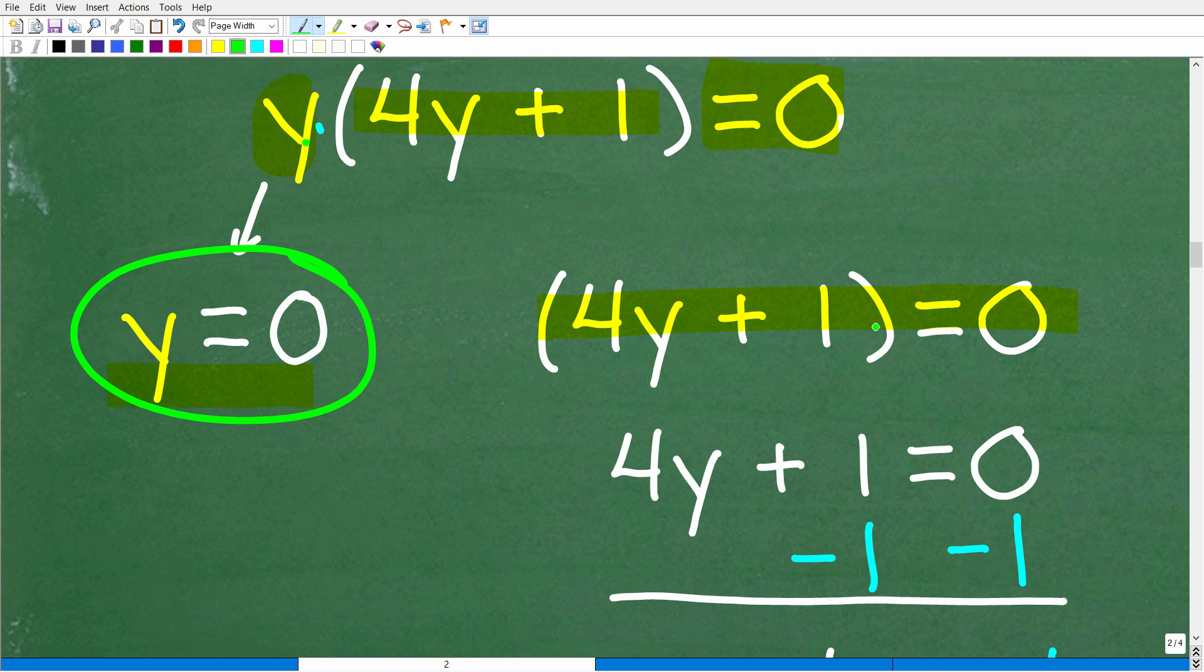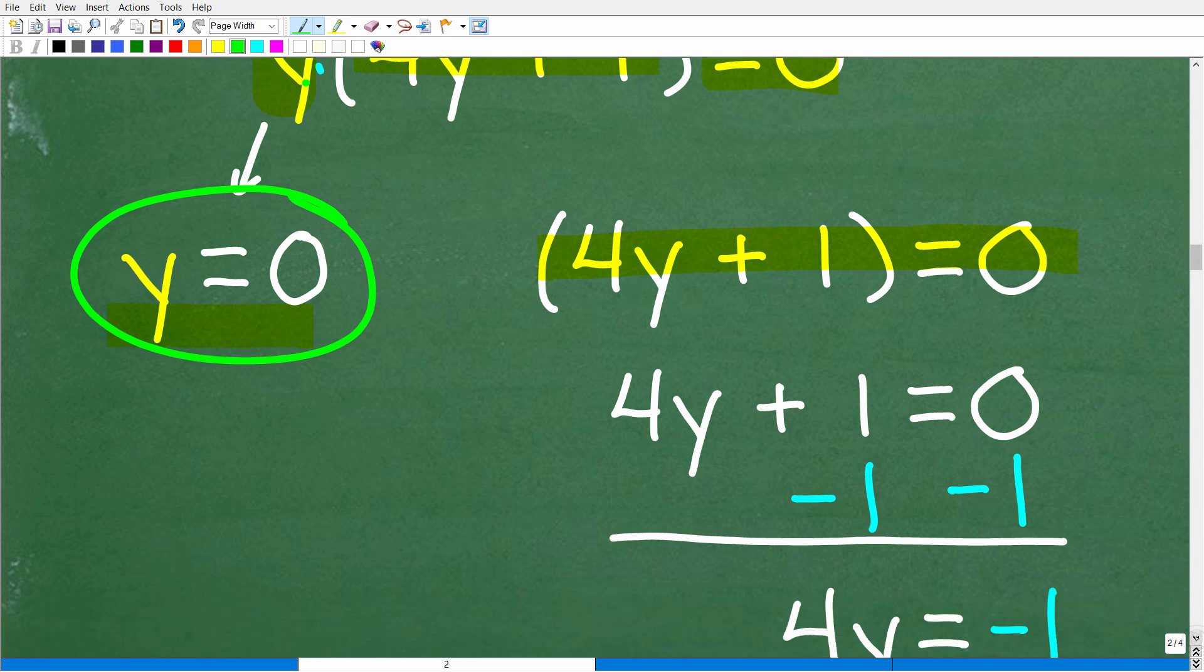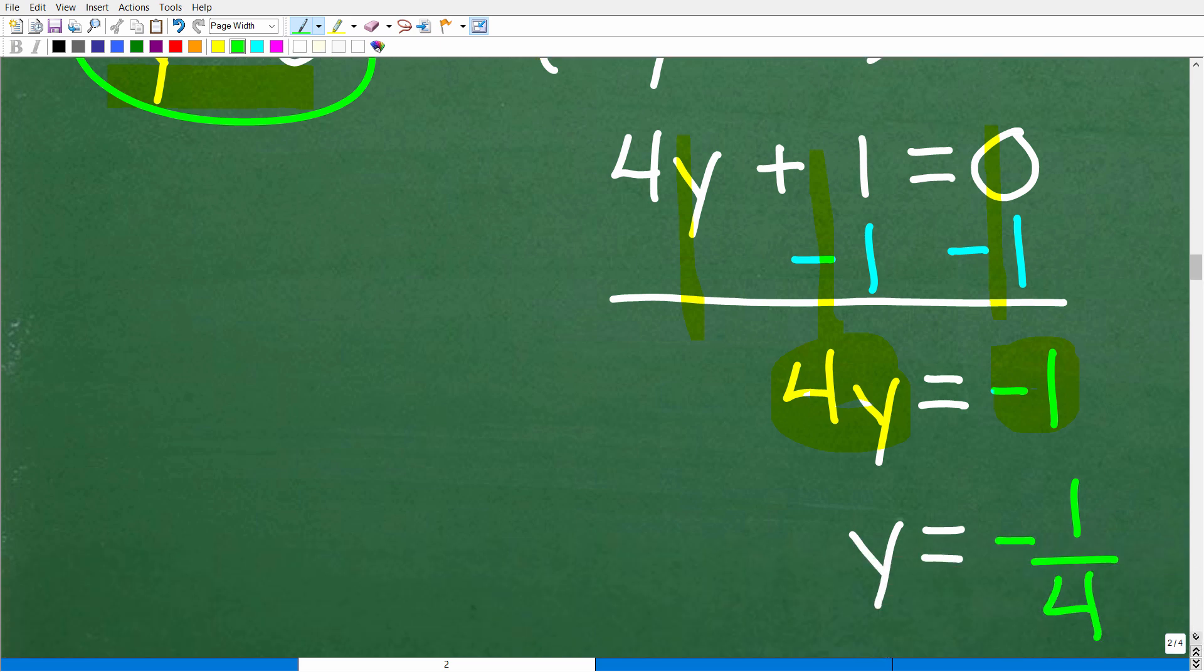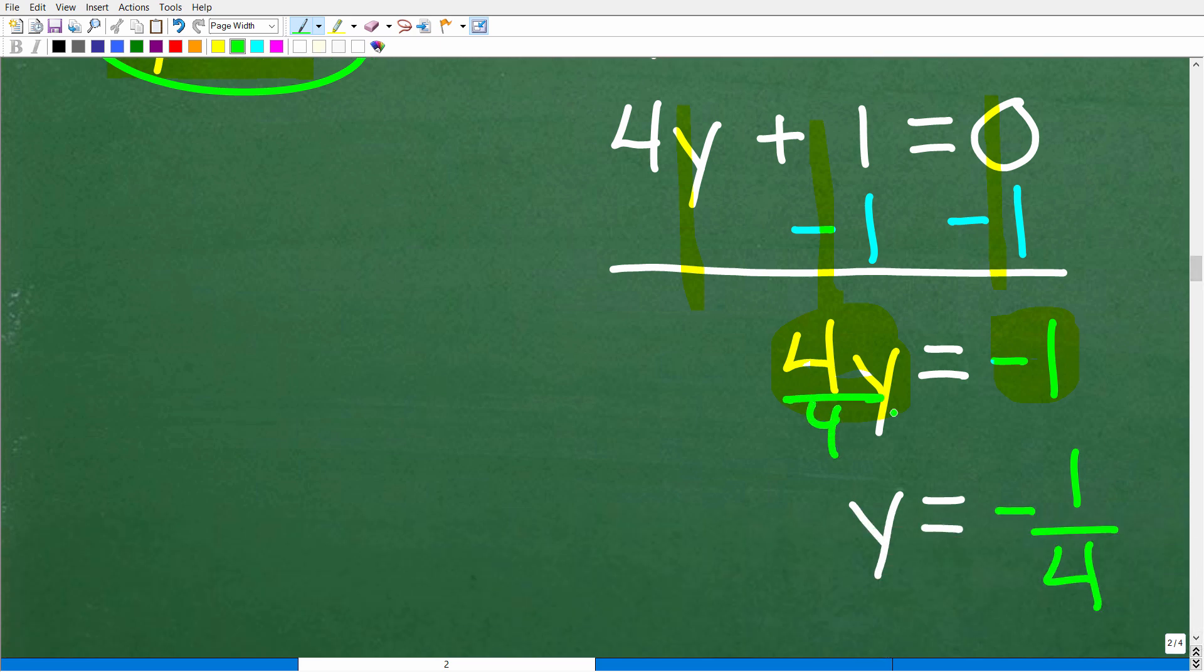And then we have 4y plus 1 is equal to 0. And we'll solve for y over here. So what we need to do is simply subtract 1 from both sides of the equation, and then we'll add down in a column manner. So we get 4y is equal to negative 1. And then to solve for y, all we have to do is divide both sides of the equation by 4. So we have y is equal to negative 1 fourth.